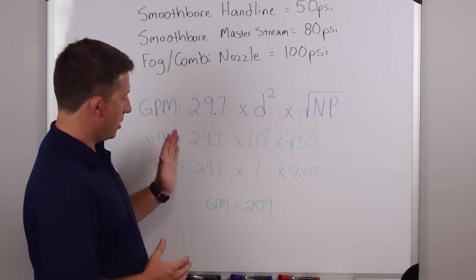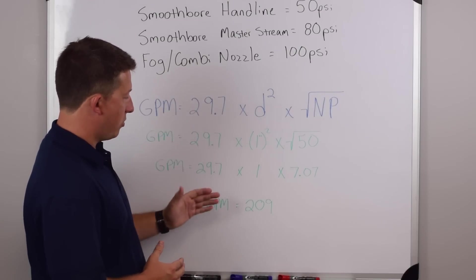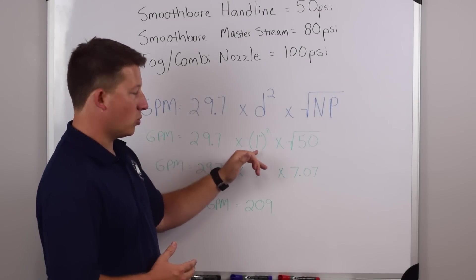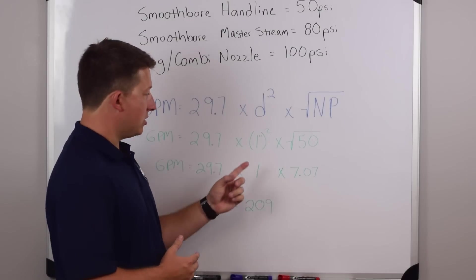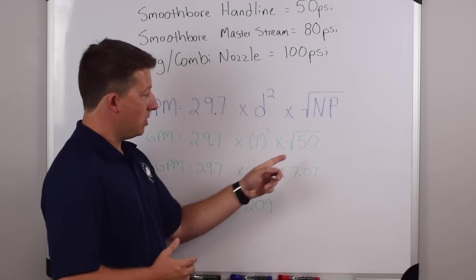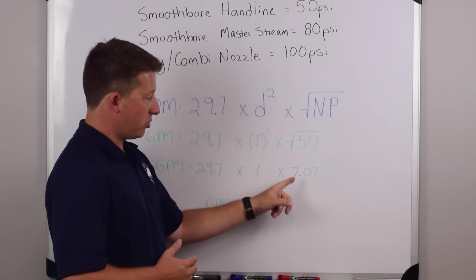So when we work it out, we're just going to simplify the problem. 29.7 times one, because the one inch diameter tip squared is only one. The square root of 50 is our nozzle pressure. That's 7.07.